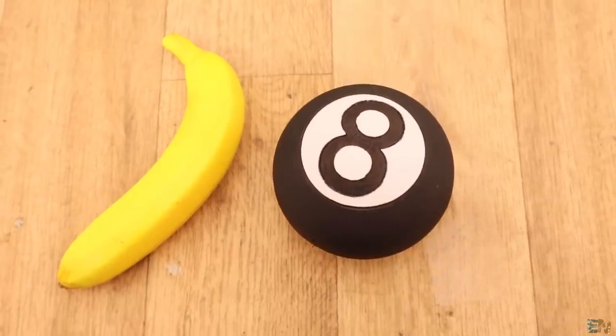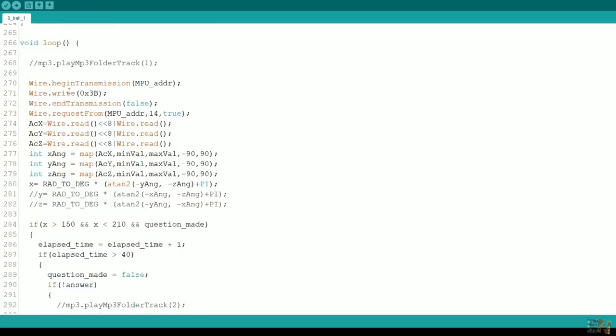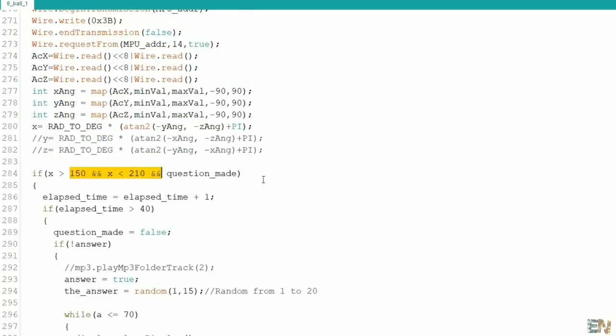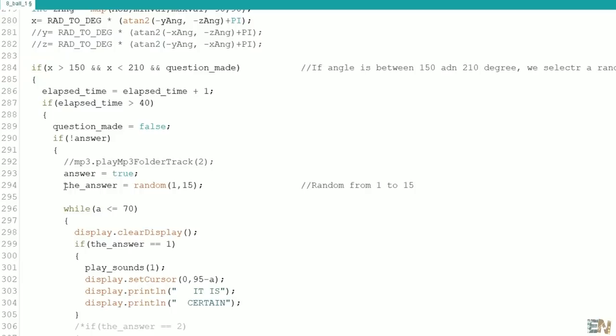Now let's take a look at the code. So guys, using the MPU 6050 module, we detect when the ball is upside down for more than 1 second. That means that a new question was made and it needs an answer. So now we get a random number from 1 to 15.